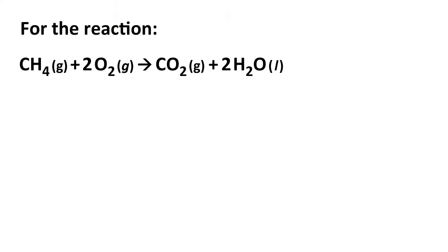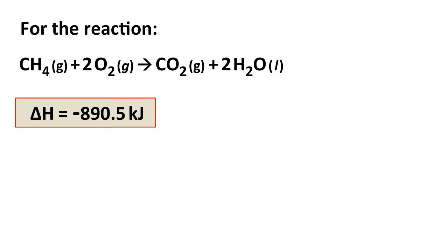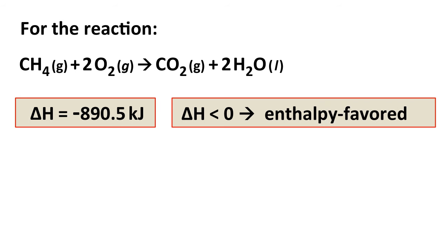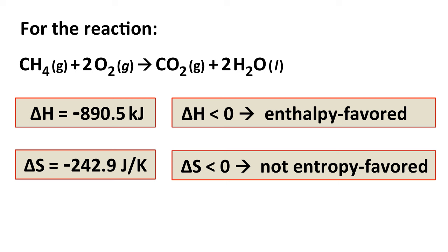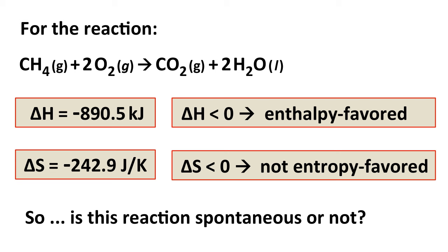To summarize for the combustion of methane: delta H is negative 890.5 kilojoules, which is a negative number, so this is an enthalpy-favored process. However, delta S is negative 242.9 joules per Kelvin, which is also negative, so this is not entropy favored. One factor is favorable and the other is not — so how do we determine if the reaction is overall spontaneous?